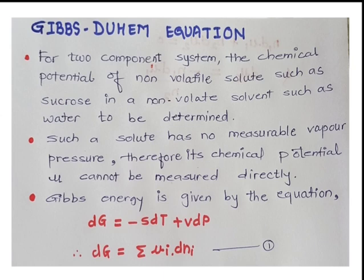The Gibbs free energy is defined by the equation: dG equals minus S dT plus V dP. Here dG is the change in Gibbs free energy, S is the entropy, T is the thermodynamic temperature, V is the volume, and P is the pressure. From the definition of chemical potential, d mu equals dG upon dn_i, which gives us dG equals the summation of mu_i dn_i.